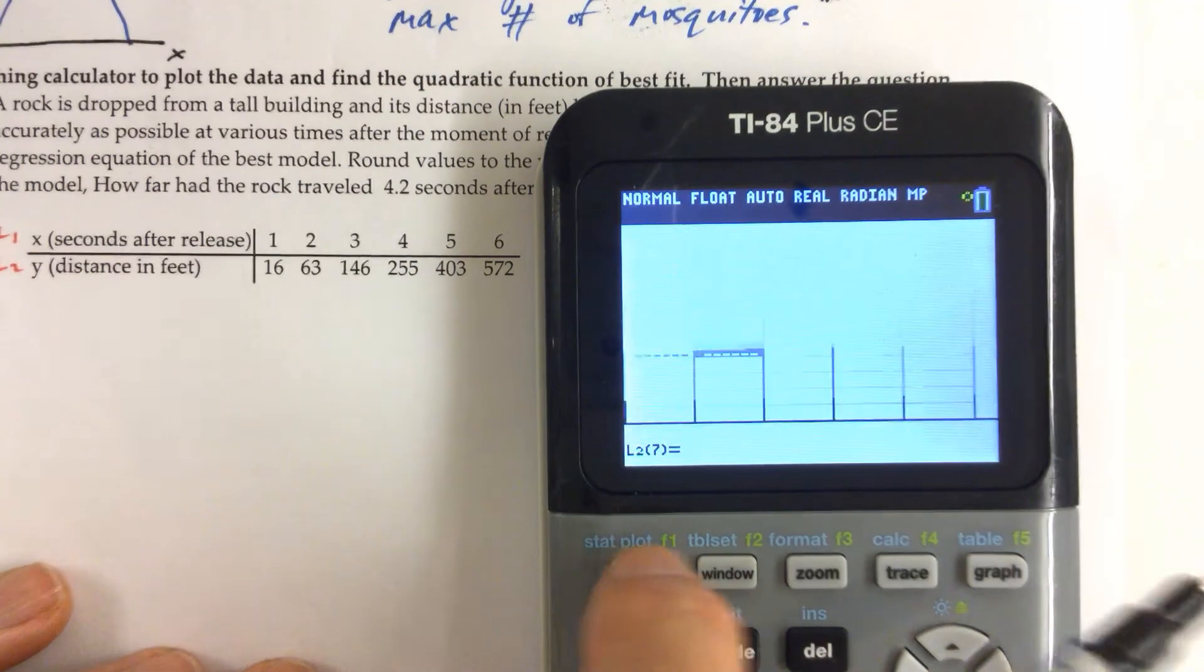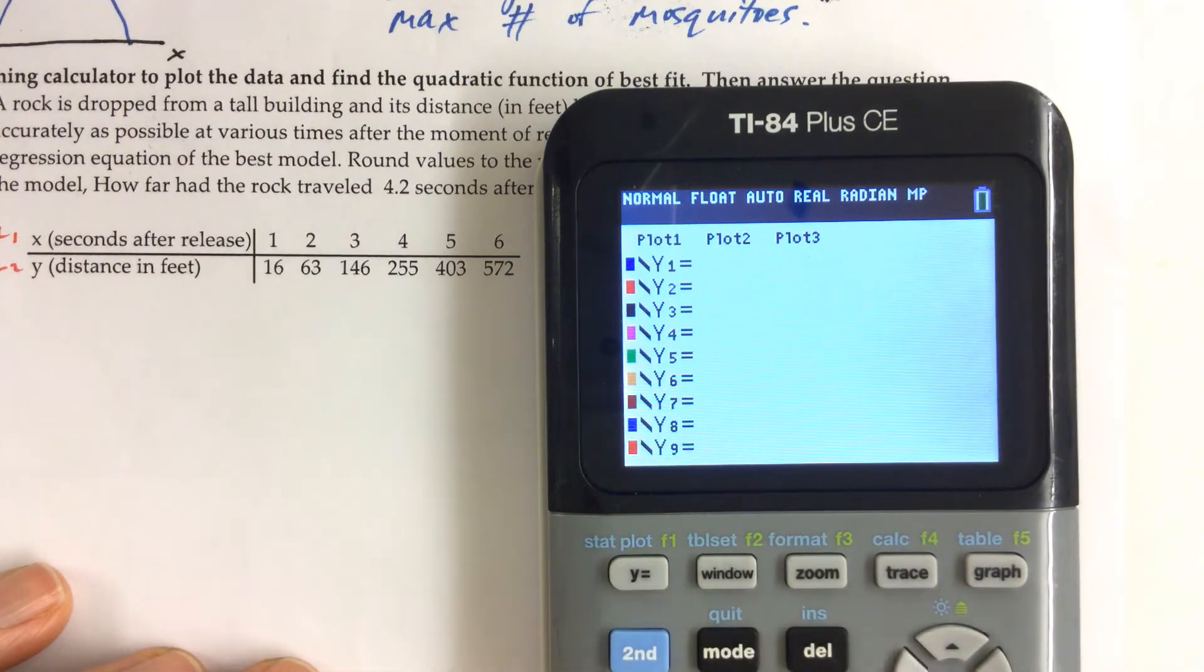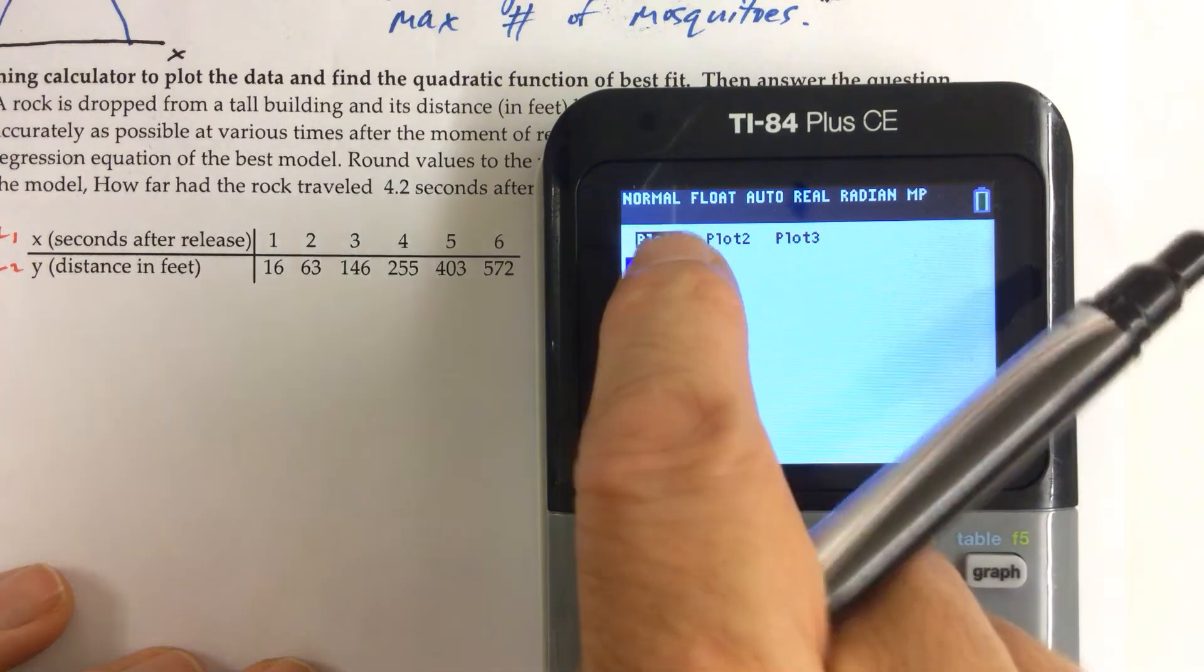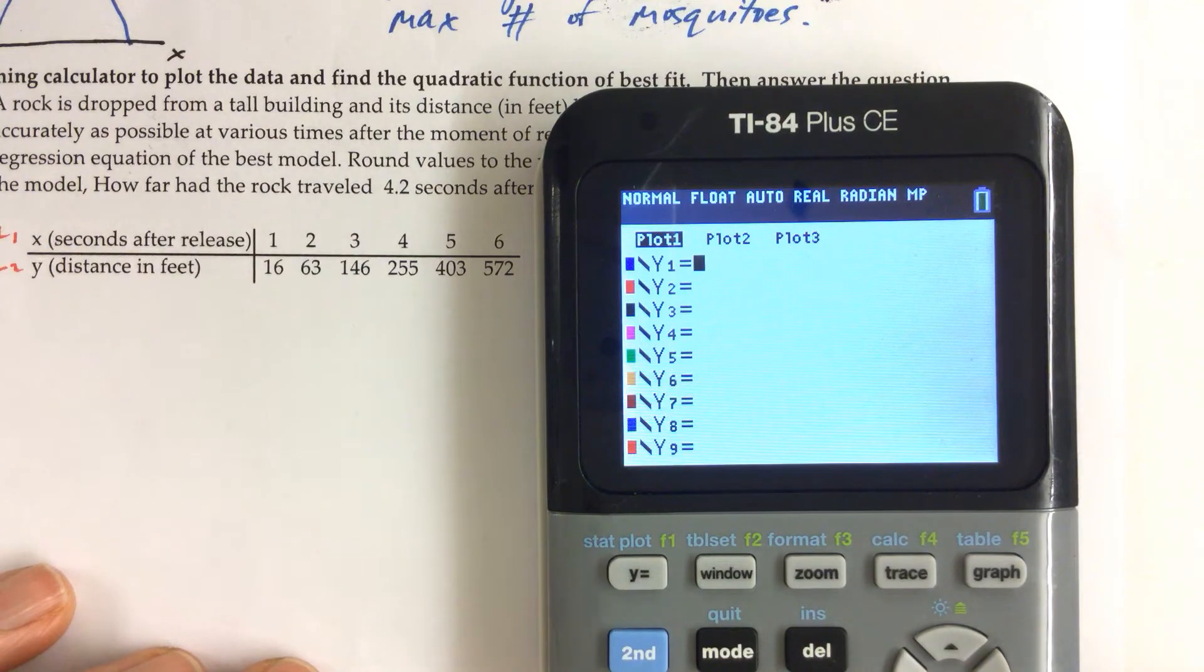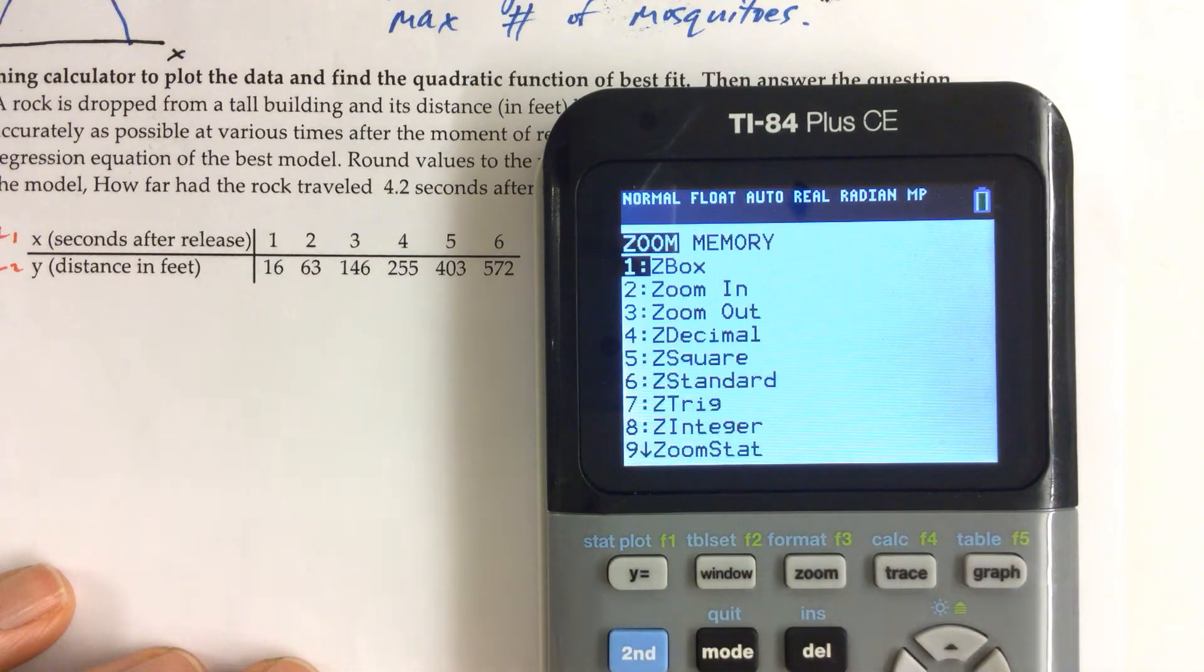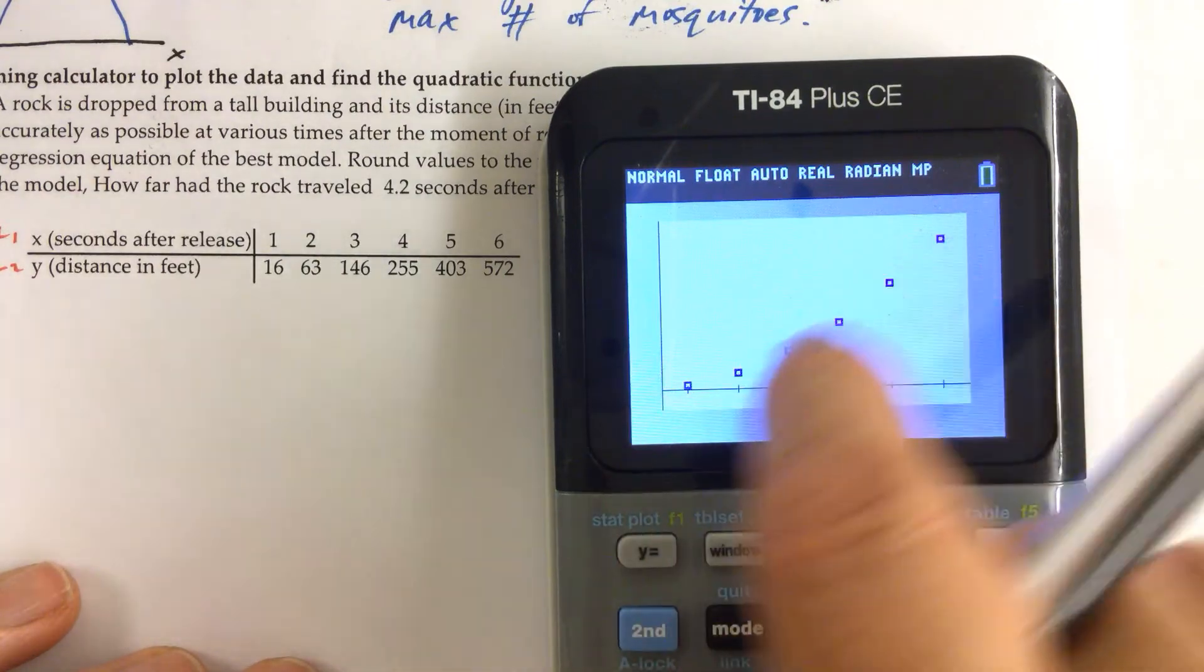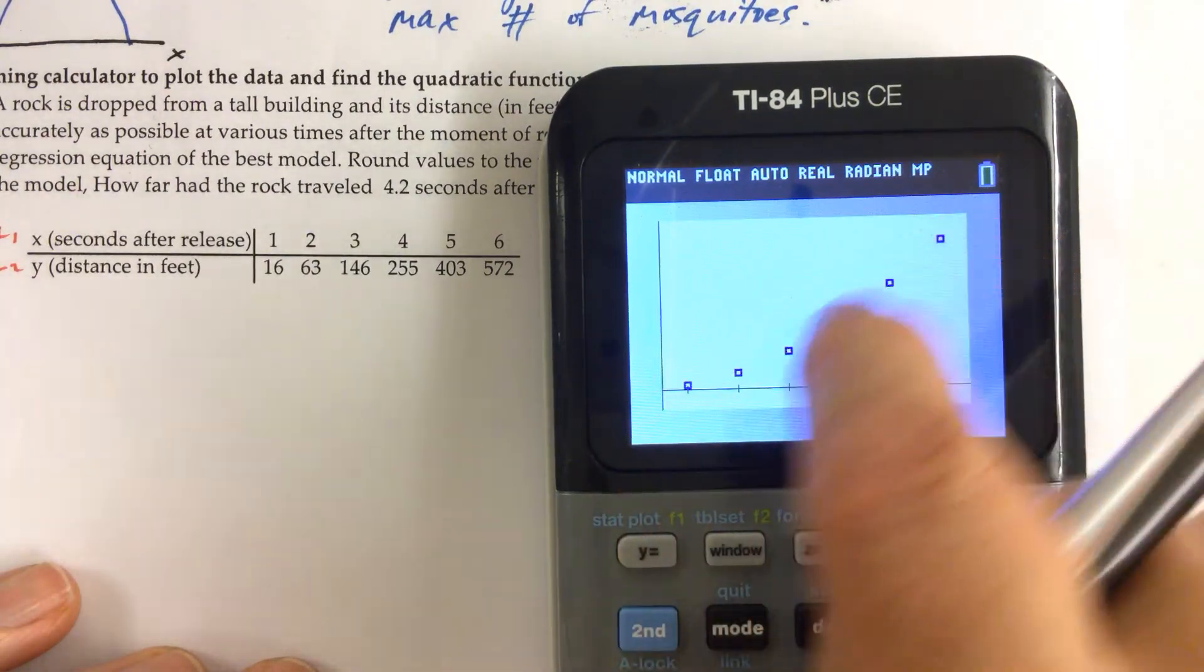And I like to go to my Y equals, push the up arrow for plot 1 to select it. I hit enter, down arrow just to make sure that plot 1 is selected. And then zoom 9 for zoom stat, or I can scroll down and hit enter. And now it shows a little curve to the scatter plot.